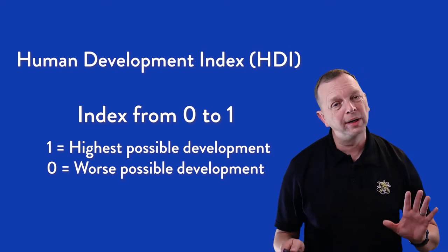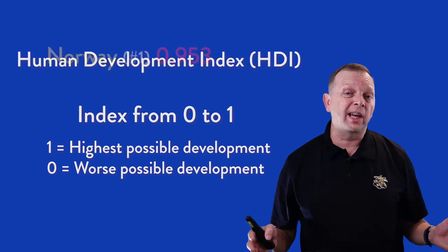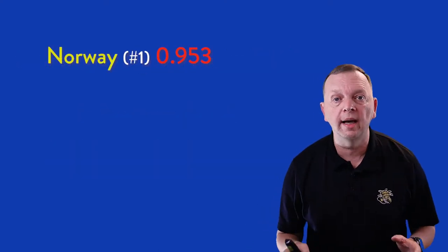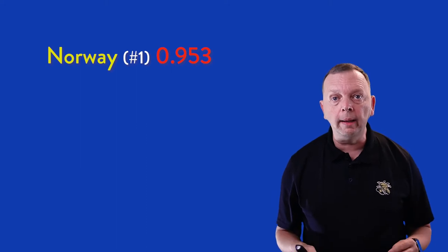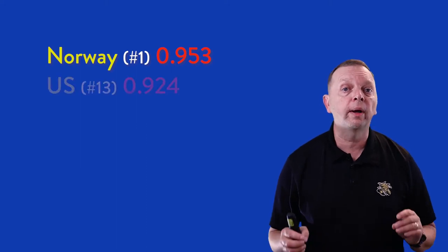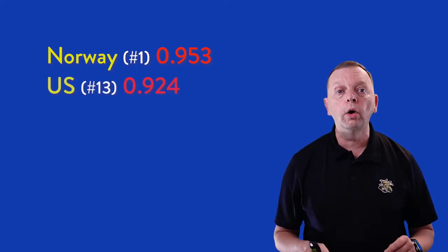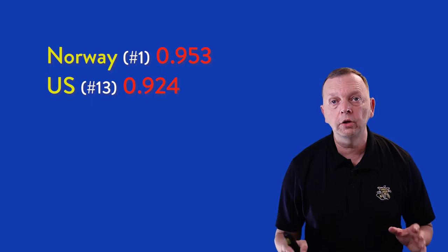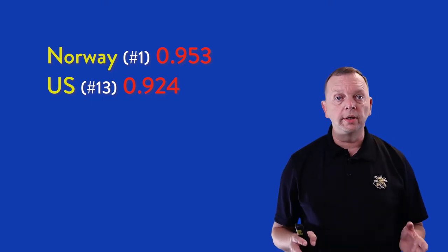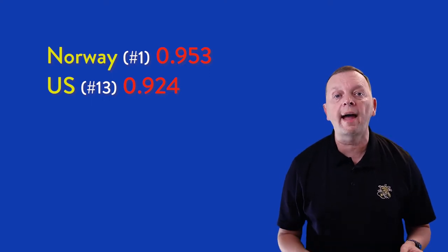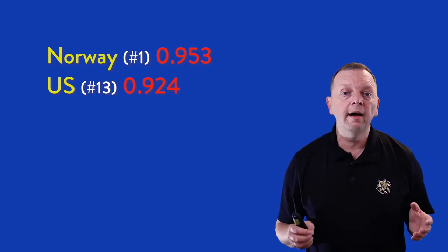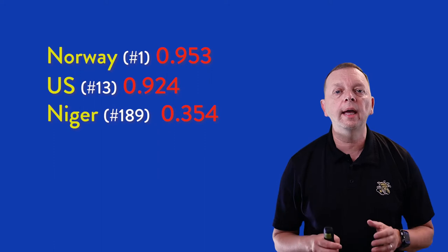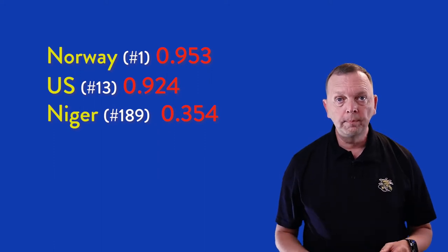There isn't a perfect 1. Norway is actually the highest with a 0.953, and the United States ranks 13th in the world at 0.924. Compare that with the country with the lowest HDI score — the African country of Niger — which has just a 0.354.